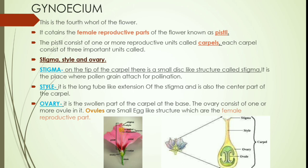On the tip of the carpel there is a small disc-like structure called stigma, which you can see at the top portion of the carpel in the picture. Stigma is sticky in nature and helps in pollination — it is the place where pollen grains attach for pollination. Style is the next part: it is a long tube-like extension of the stigma and also the center part of the carpel.